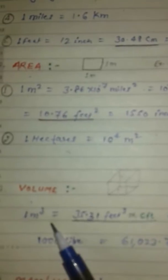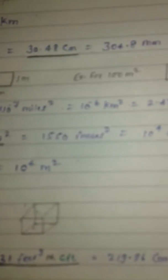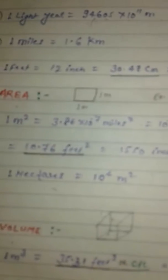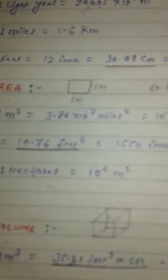Volume: One meter cube is equal to 35.31 feet cube or CFT, 219.96 gallons UK, 264.17 gallons US.